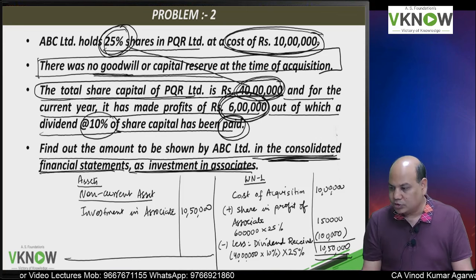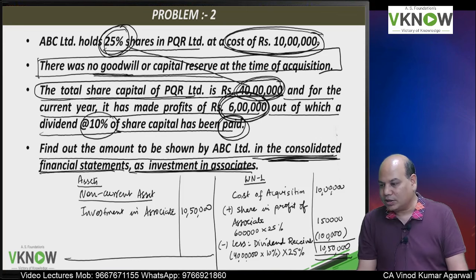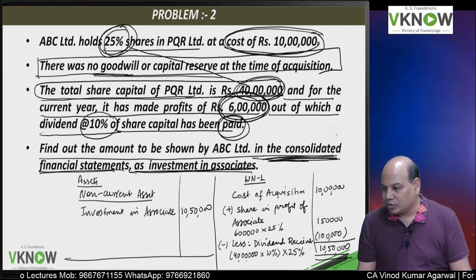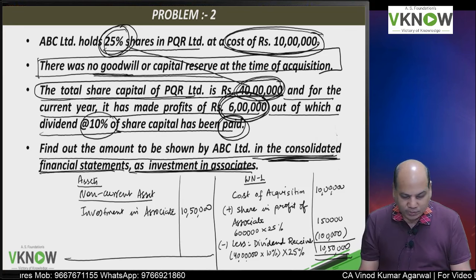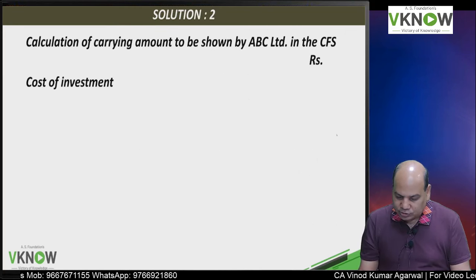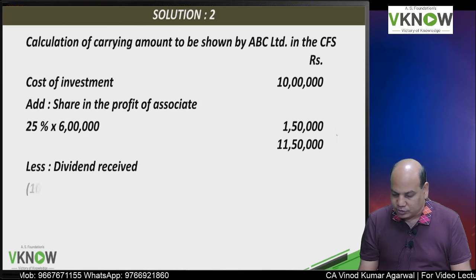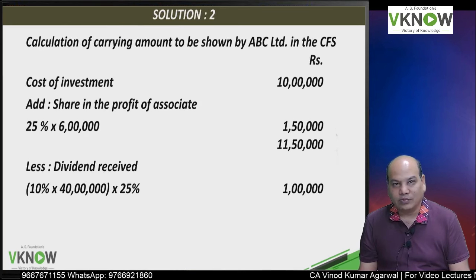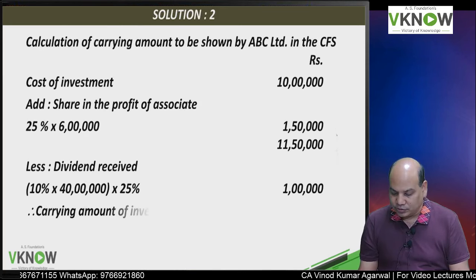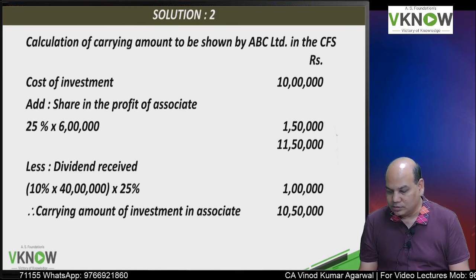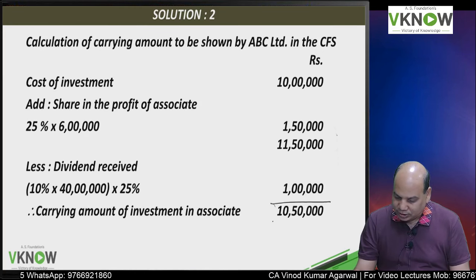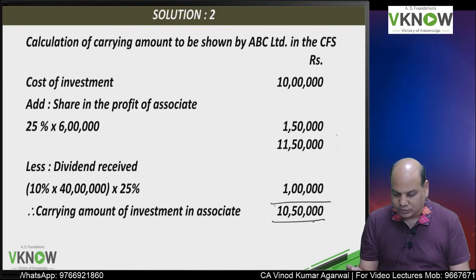This is how the student should prepare the answer. You take 10 lakh, add 1 lakh 50,000, minus 1 lakh — carrying amount 10 lakh 50,000. You can also check the answer printed in the book.